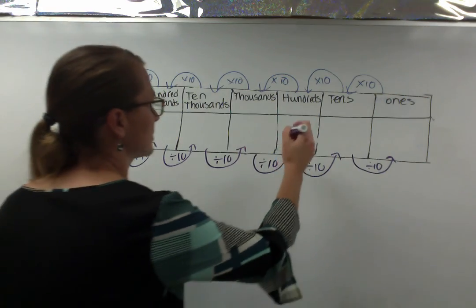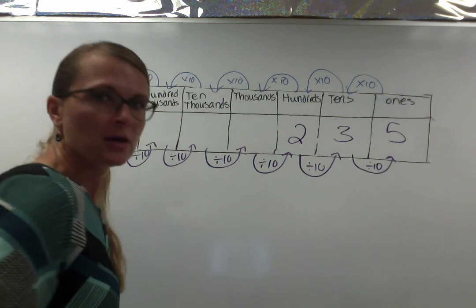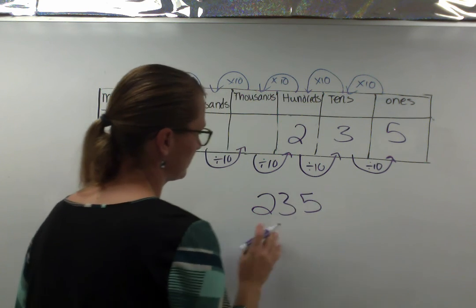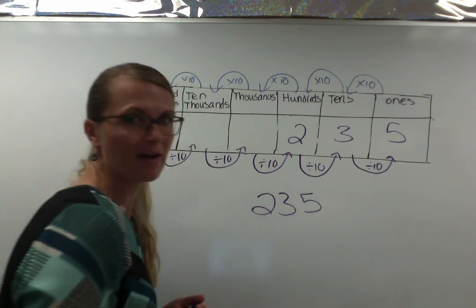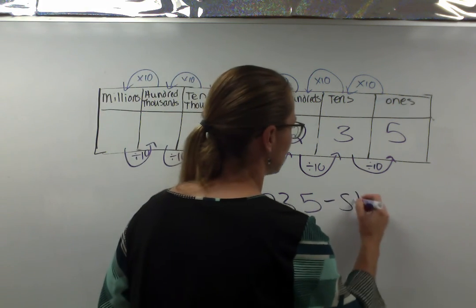I'm going to write a number in our place value chart, say 235. So 235, if I just write it the way that I write it, with the two in the hundreds place, the three in the tens place, the ones in the five place, that is the normal way we write a number. We call this the standard form.